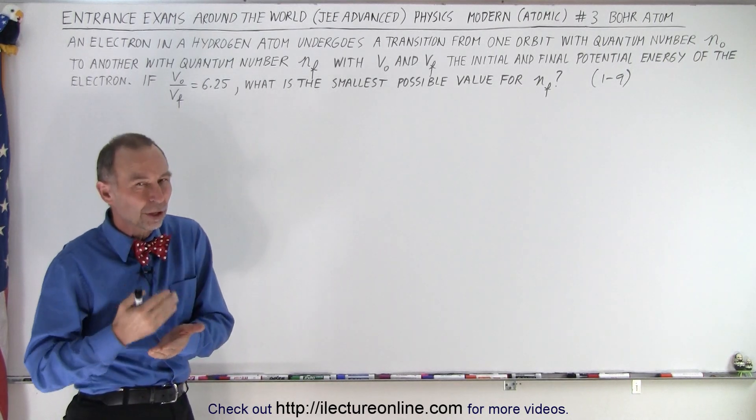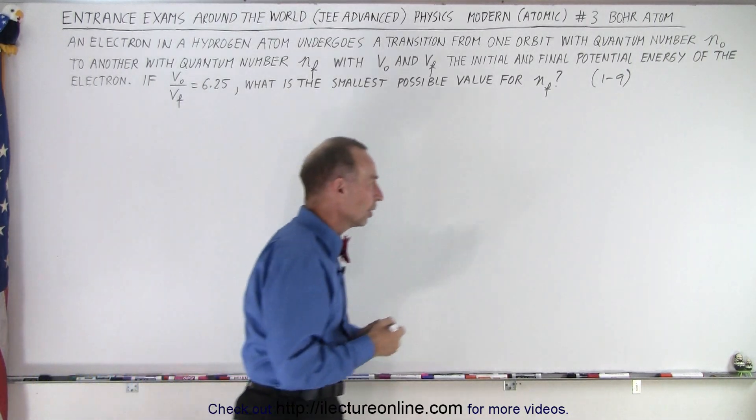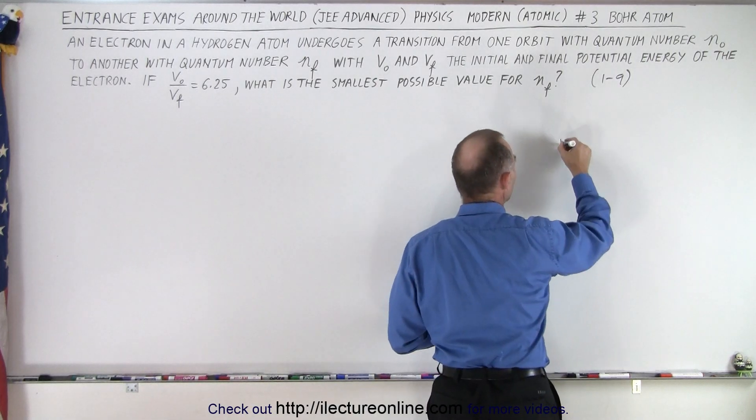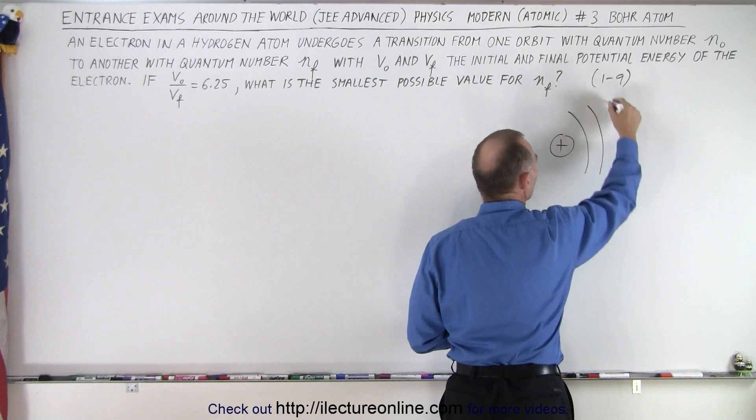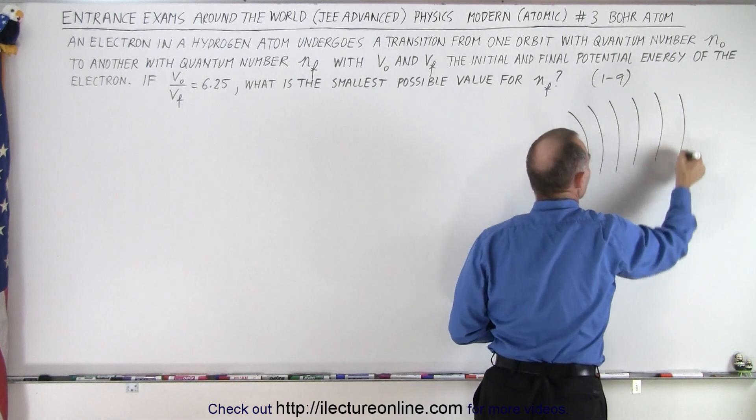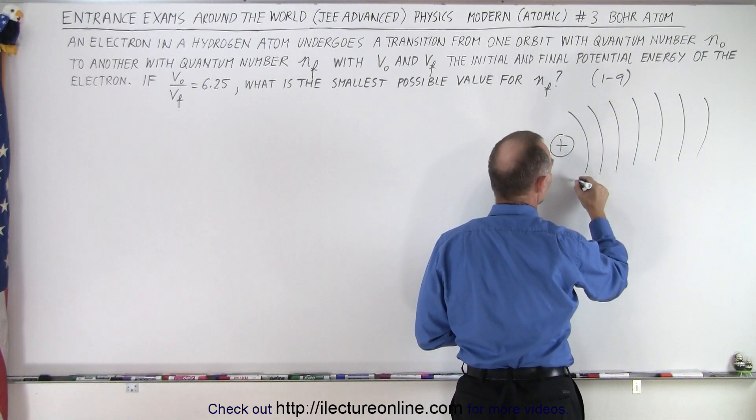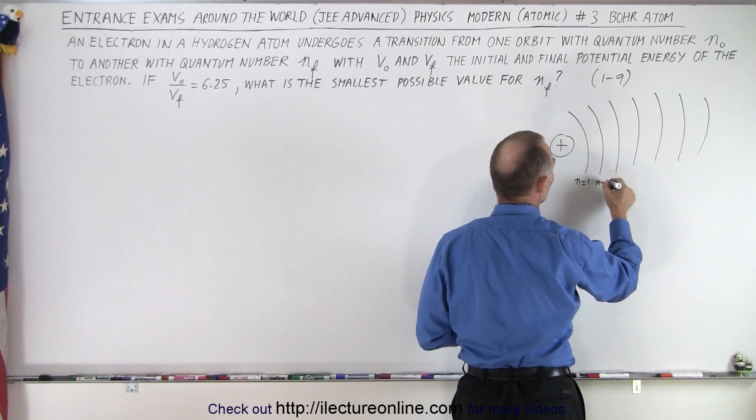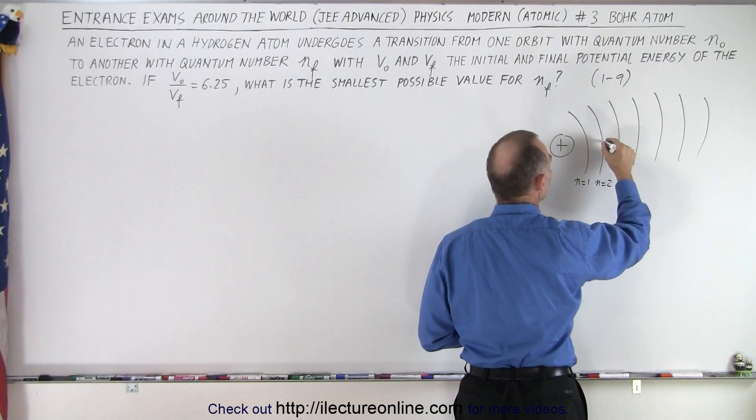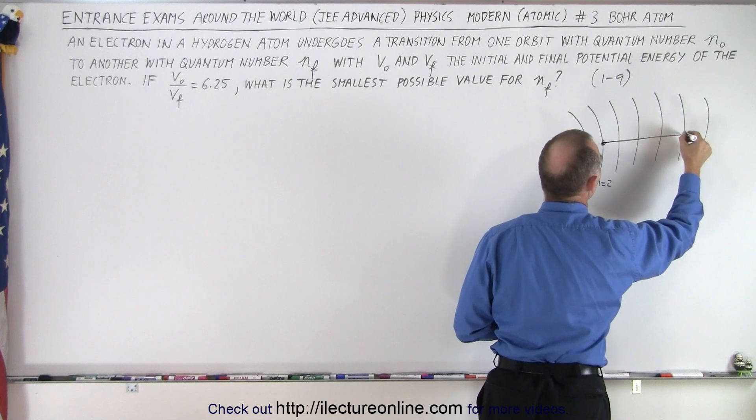So let's take a look. Let's say that we have the nucleus of the hydrogen atom, and we have a bunch of orbitals that the electron can be in, or energy levels. So this is energy level n equals 1, n equals 2, and so forth. And it jumps from one to another position.